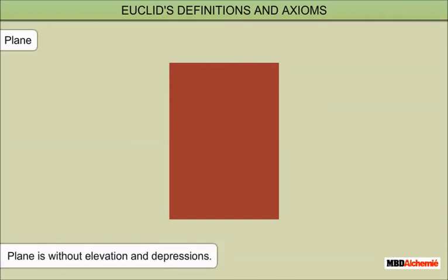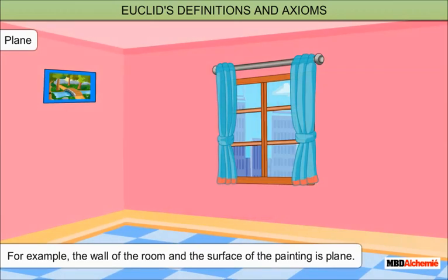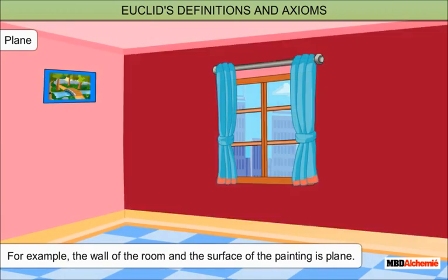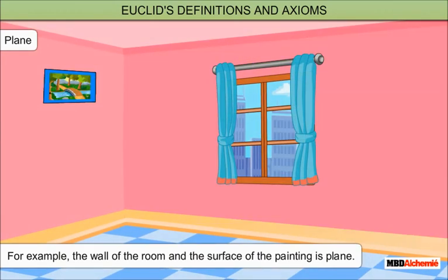Plane is without elevation and depressions. For example, the wall of the room, the surface of a painting, are some examples of plane.